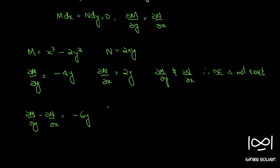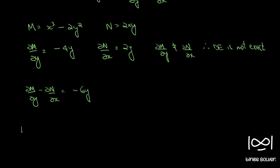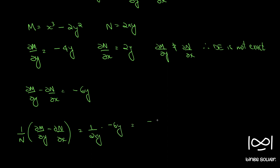If you divide this difference by N, the y cancels and it becomes a function of x alone. So (1/N)(∂M/∂y minus ∂N/∂x) equals (1/2xy) times minus 6y, which becomes minus 3 by x. So it is a function of x alone. Let us call that function f(x) equal to minus 3 by x.